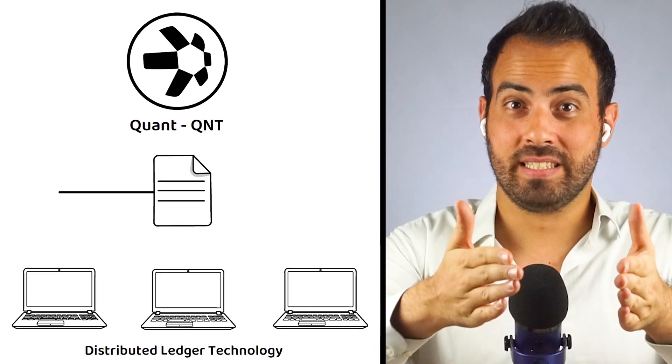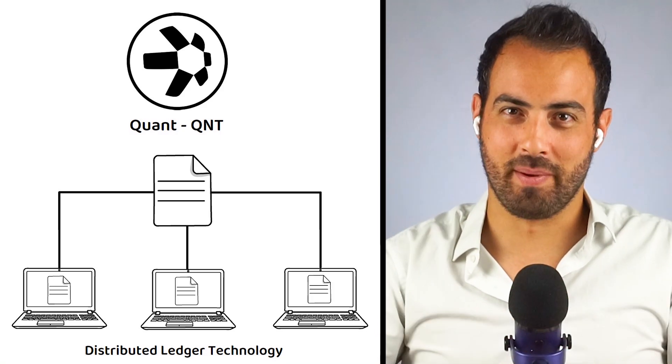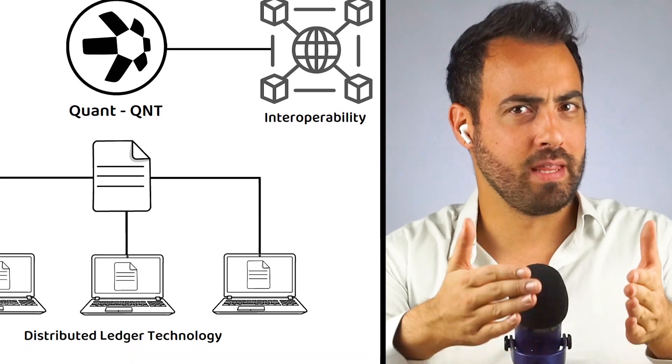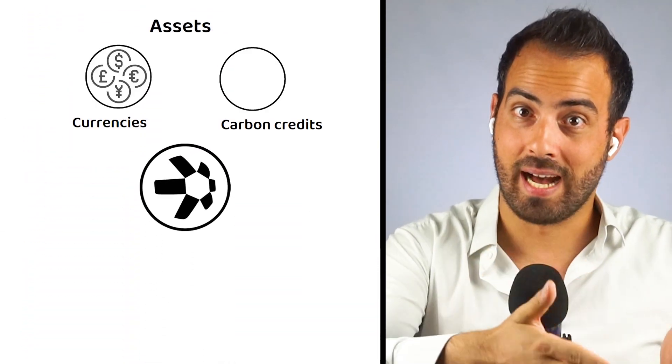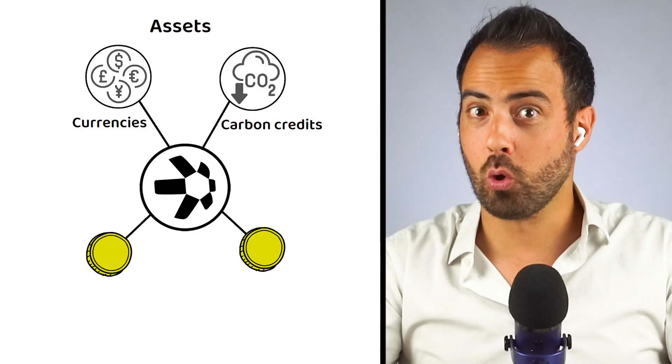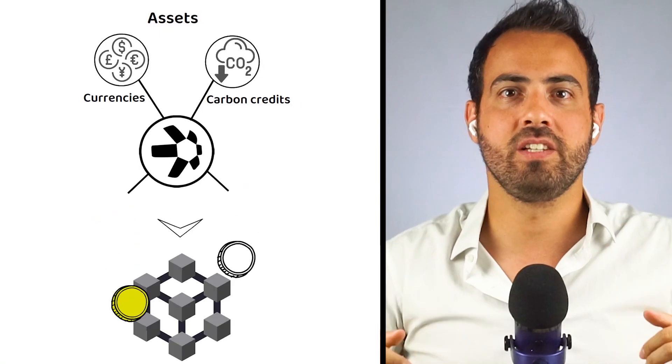Quant, also known by the market ticker QNT, is a type of distributed ledger technology which looks to bring interoperability to the blockchain. Quant aims to be the backbone that allows for assets of all kinds, from currencies to carbon credits, to be tokenized and sold on the blockchain through their unique over-ledger operating system.